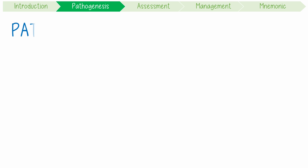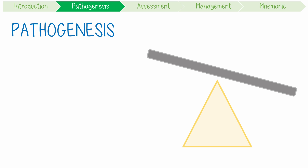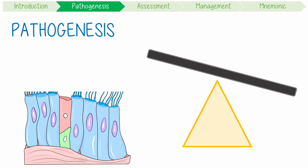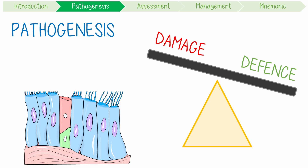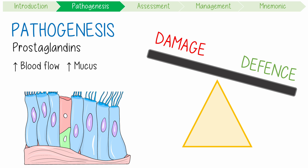Disease pathogenesis involves an imbalance between mucosal damage and mucosal defense mechanisms. Under normal conditions, we release prostaglandins, which are vital signaling lipids, stimulating blood flow, mucous secretion, and bicarbonate production. This helps our mucosal tissue create a protective barrier against the acidic gastric juices.